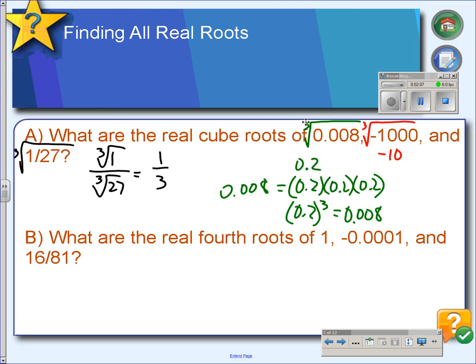In example B here, we're doing fourth roots, so the fourth root of 1 would be plus or minus 1, because 1 to the fourth is 1, but negative 1 to the fourth is also positive 1.